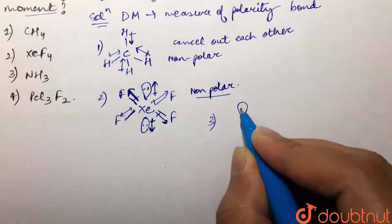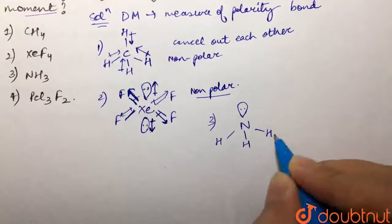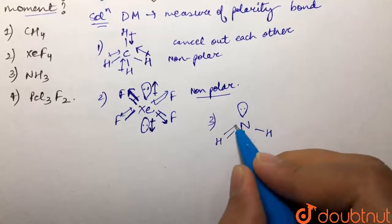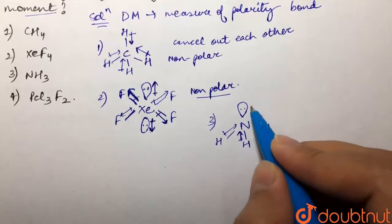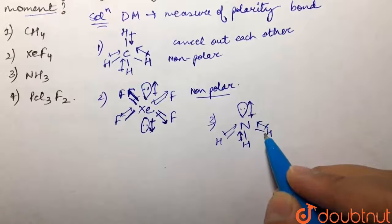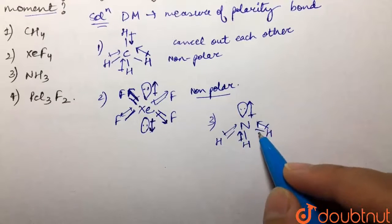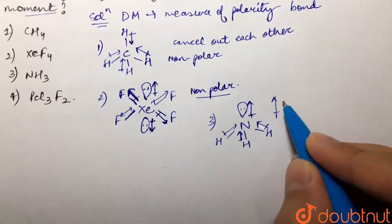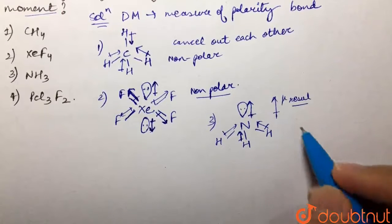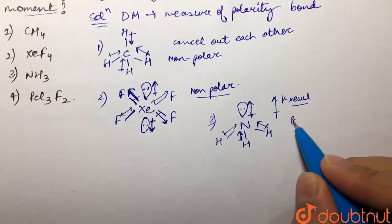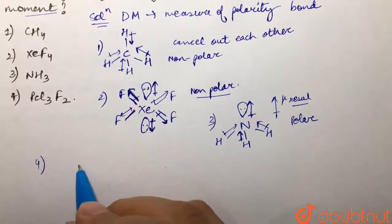Third, we have ammonia. Ammonia has a pyramidal structure — nitrogen makes three bonds with hydrogen and has one lone pair. The bond dipole direction is towards nitrogen, and the lone pair also contributes in the same direction. These dipoles are additive, giving a resultant dipole moment in the upward direction. So ammonia is a polar molecule.